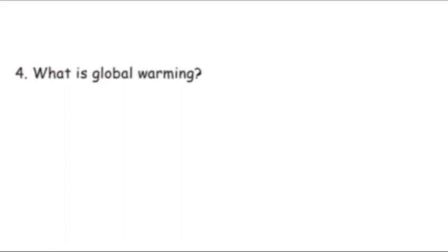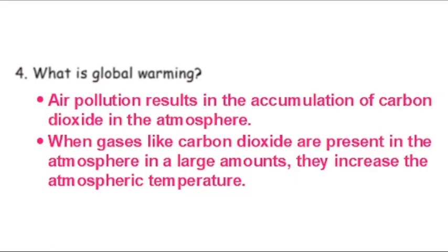Fourth brief answer: what is global warming? Air pollution results in the accumulation of carbon dioxide in the atmosphere. When gases like carbon dioxide are present in large amounts, they increase the atmospheric temperature. This increase in atmospheric temperature is called global warming.